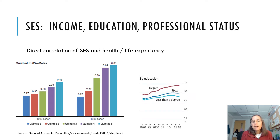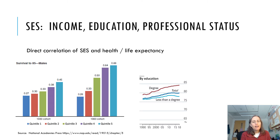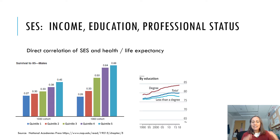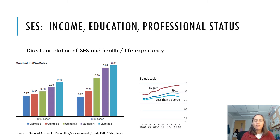This graph looks at life expectancy based on education — specifically whether you had a bachelor's degree or not. People with a bachelor's degree had an average life expectancy in 2018 of about 84, whereas people who did not had about 77. That's a difference of seven years — enormous. And this difference is widening over time; it's getting amplified. The more educated, wealthier people are benefiting from advances in health, whereas the less educated, less wealthy people are not.